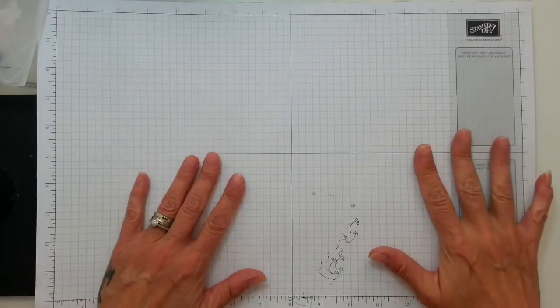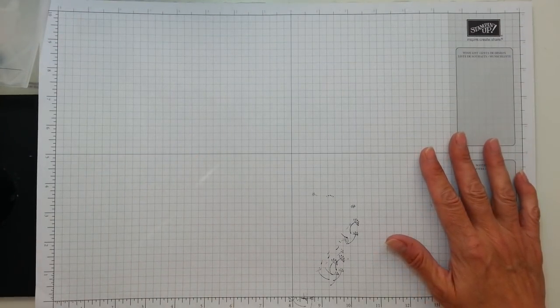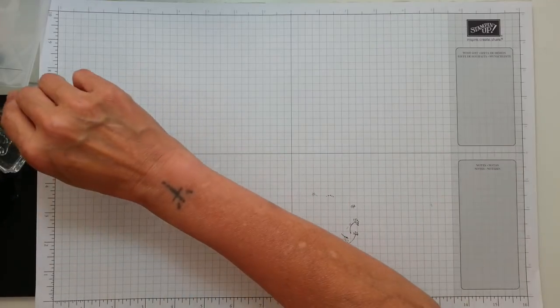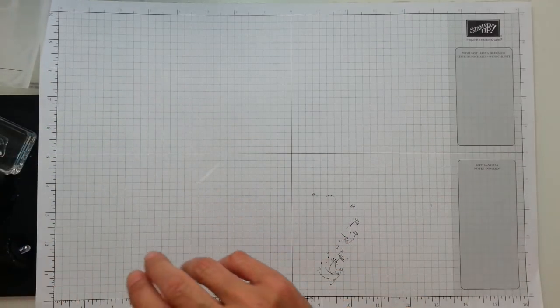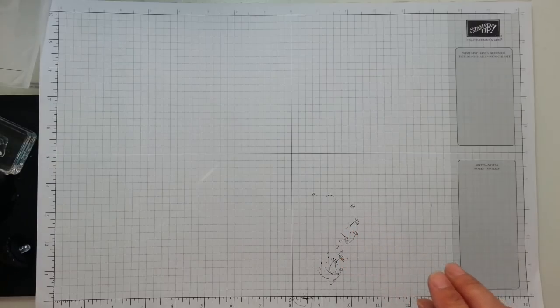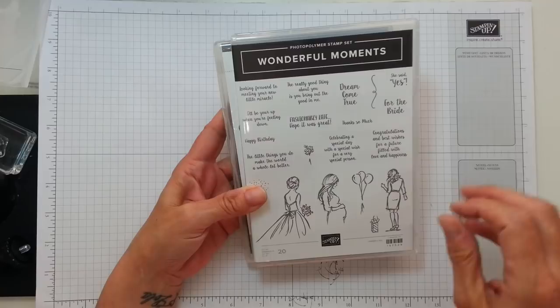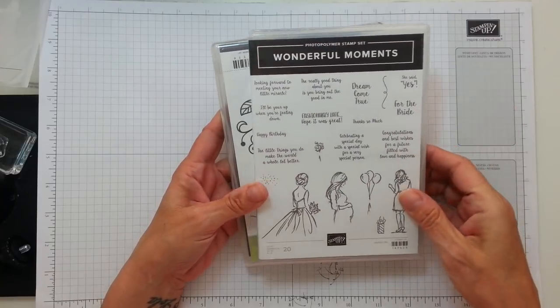This is Gaynor again. I've been having a play with the new Wonderful Moments stamp set. It's the one with the bride, the pregnant lady and the other lady with the balloons and presents and stuff.